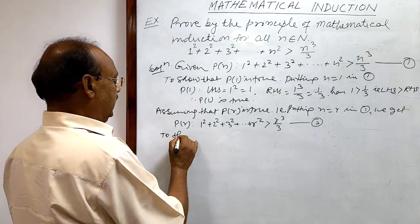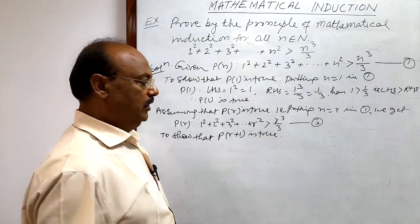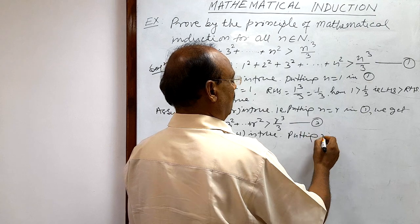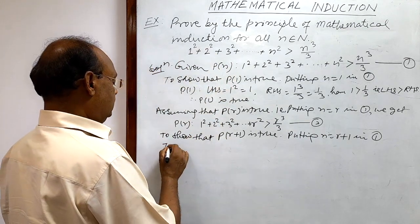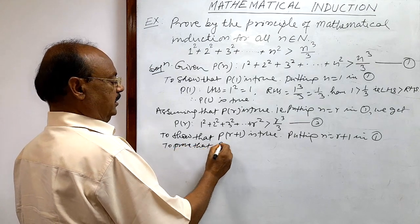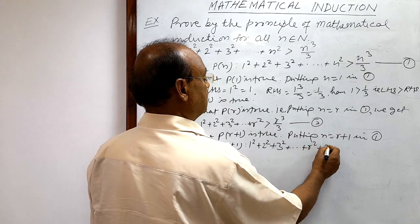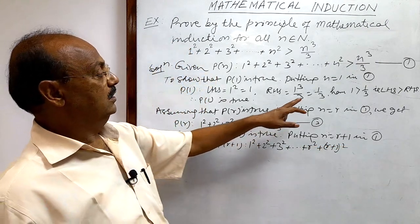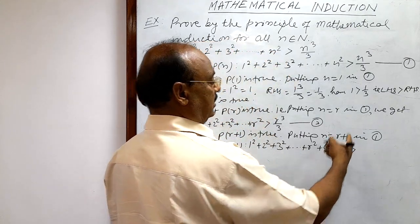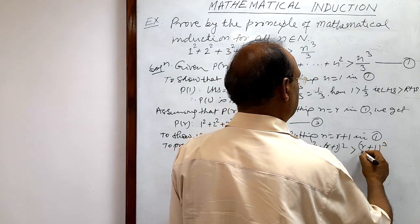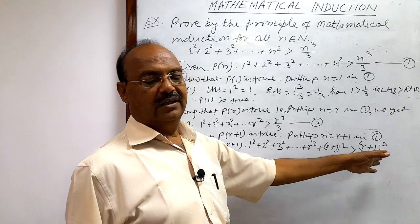Third and last step: we have to show that P(r+1) is true. Putting n=r+1 in relation number 1, we need to prove that 1² + 2² + 3² + ... + r² + (r+1)² > (r+1)³/3. Here (r+1)² is the last term and r² is the second last term. We start from the left hand side and show that LHS > RHS.